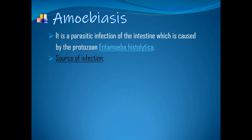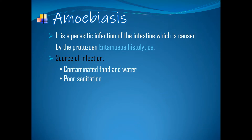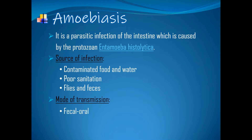Source of infection: contaminated food and water, poor sanitation, and flies and feces. Mode of transmission — fecal-oral route: the ingestion of fecally contaminated food or water that contains amoebic cysts.